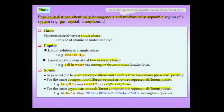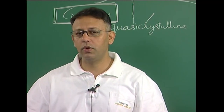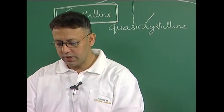Also, for the same crystal structure, different compositions represent different phases. Suppose I have a gold-copper alloy, and gold and copper dissolve in each other in all proportions — forming an isomorphous system as we shall see later. A 70 percent gold, 30 percent copper alloy (alloy 1) and a different composition alloy (alloy 2) represent different phases. Though both have the same components gold and copper, and both have the same FCC crystal structure, the proportion of gold and copper is different, and therefore these represent different phases. There is a rich variety of phases possible in the solid state.